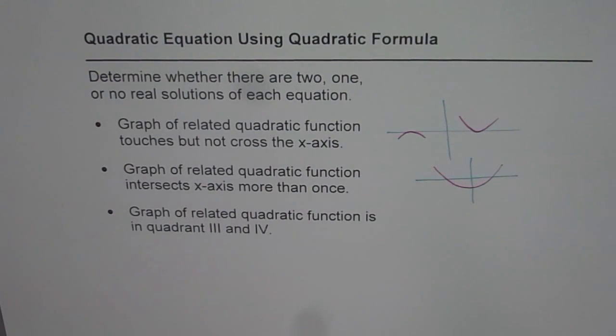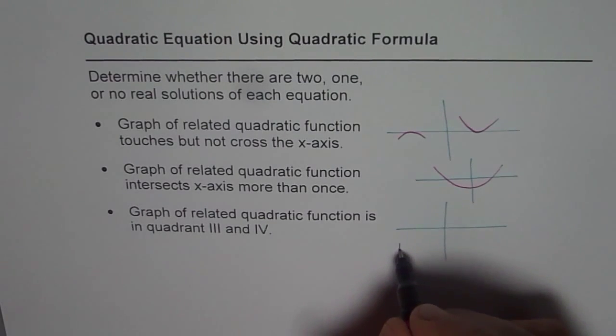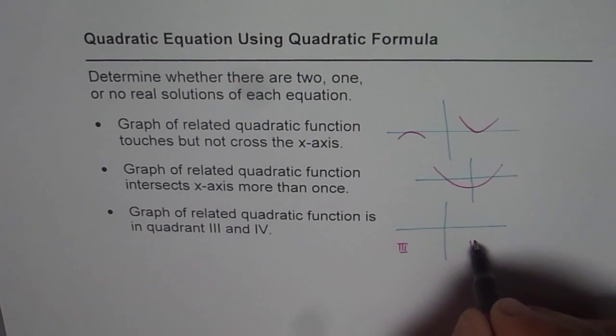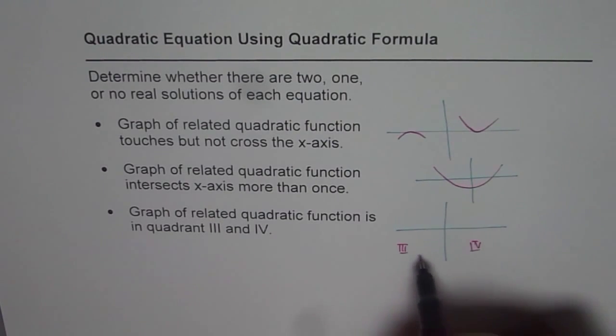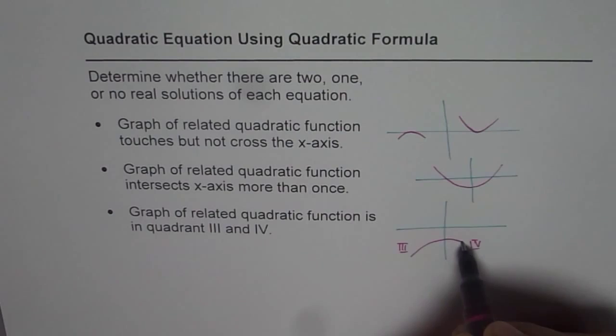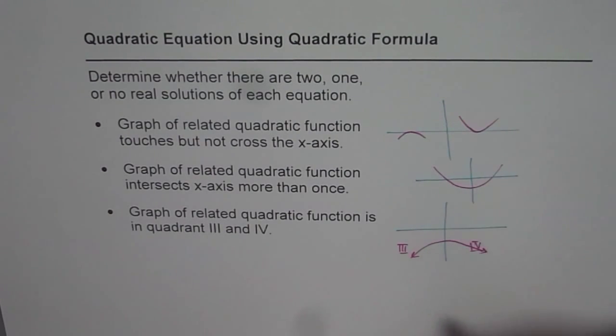And the third one is graph of related quadratic function is in quadrant three and four. So the function is only in quadrant three and four. This is your quadrant three and that is your quadrant four. If the graph is only in quadrant three and four then it could be only like this. So these are the graphical representations of related quadratic functions.